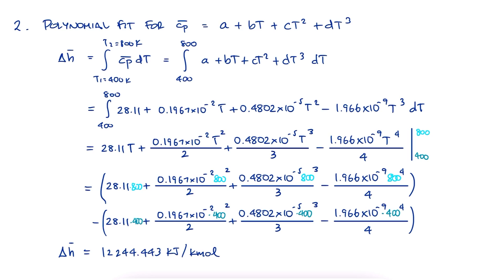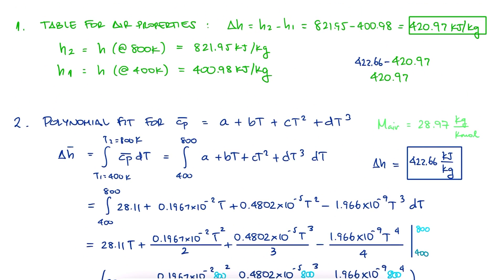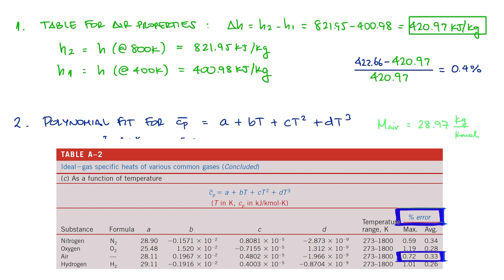Since what we want to find is the change in specific enthalpy h, not the change in molar specific enthalpy h bar, we divide this result by the molecular weight of air to obtain 422.66 kJ per kilogram. This is very close to our first value, but still an error of 0.4%, which lies on the range of error that even the table acknowledges.